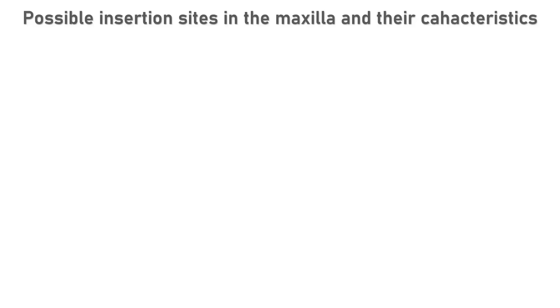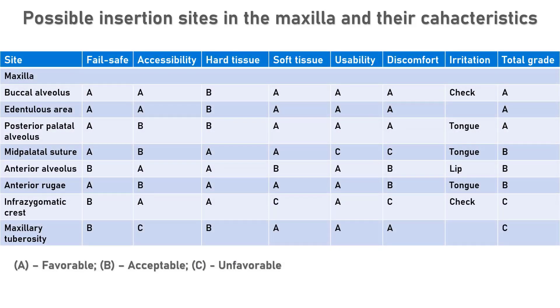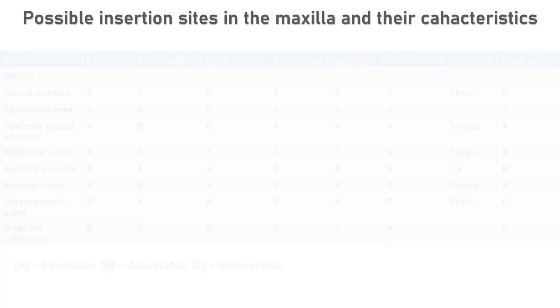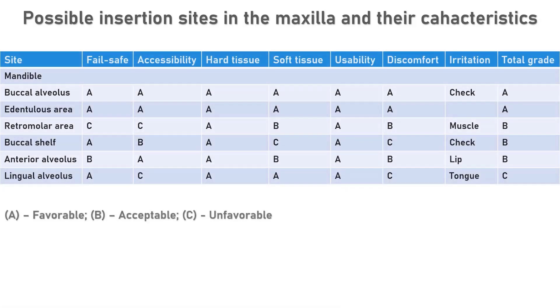Possible insertion sites in the maxilla and their characteristics are described in the table. For implantation in the maxillary buccal alveolus, precautions must be taken to prevent injury not only to the teeth but also to the maxillary sinus.